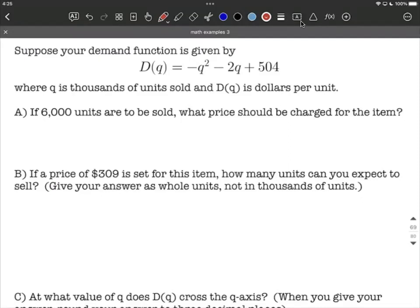Because the demand function sometimes has q as our variable, sometimes it has p as the variable, let's just be careful about this. q is in thousands of units sold, so q is a quantity. And it also tells us that D(q) is dollars per unit. So D(q) is a price, and q is a quantity, but it's in thousands.